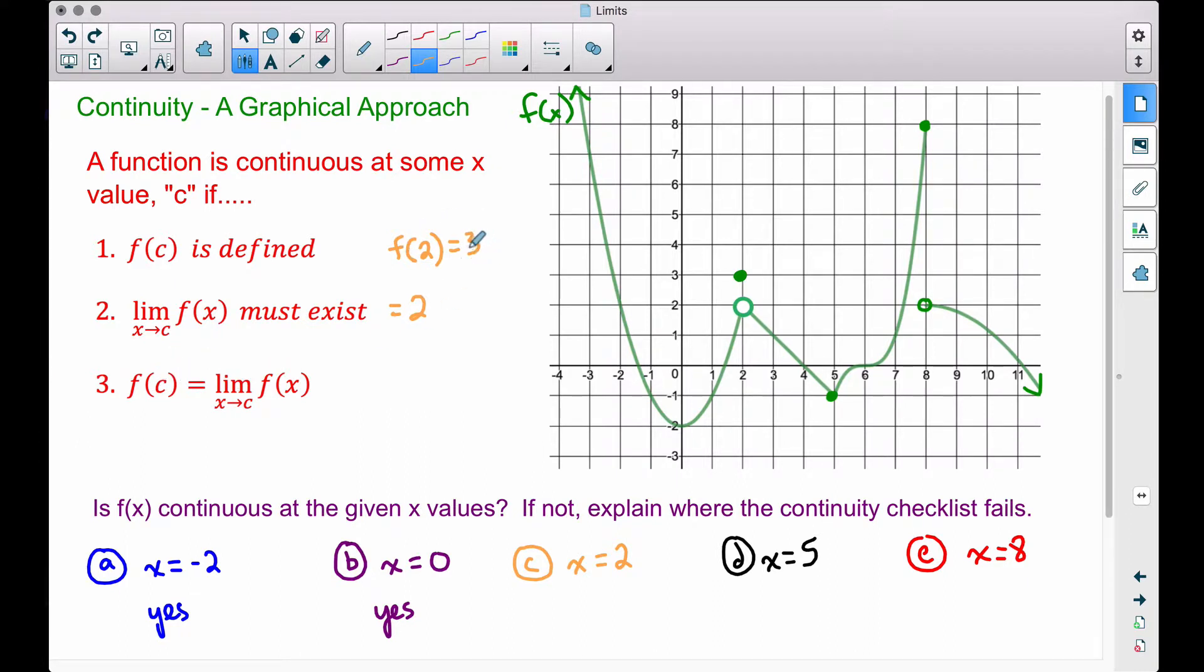the function was defined at 3, the limit was 2, they're not equal. Therefore, if we want to explain where the continuity checklist fails, we would say it fails at number 3 in this case. So that's what I want to emphasize for these problems where we do have discontinuities in our graph.